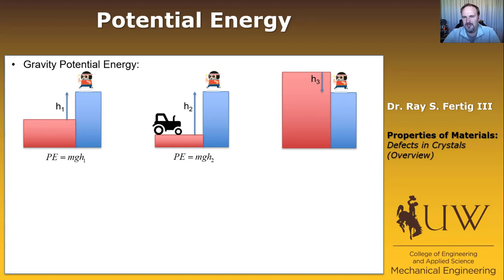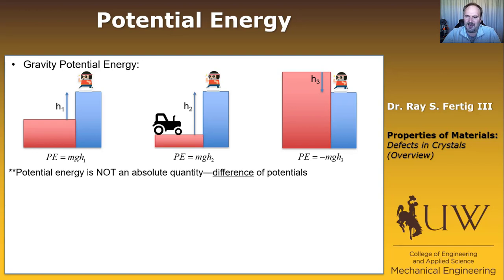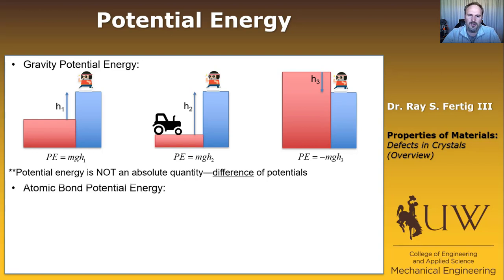If I built a platform up so that it's above the person, the potential energy would be negative m times g times h3. My point is that as far as that person was concerned, nothing changed — whether I brought in a tractor or built an enormous hill. It's because potential energy is not an absolute quantity. What matters is the difference between potentials.